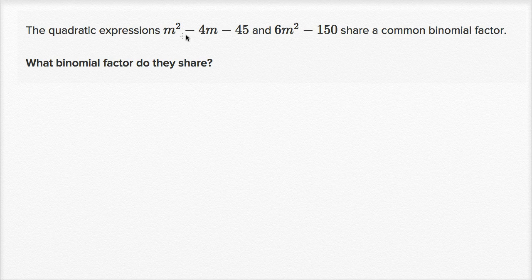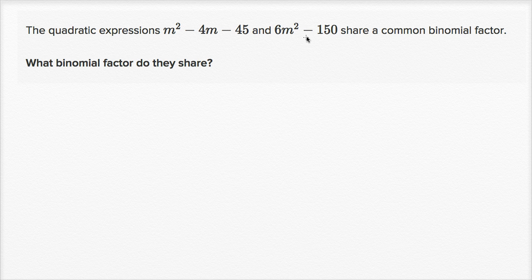We're told that the quadratic expressions m squared minus 4m minus 45 and 6m squared minus 150 share a common binomial factor. What binomial factor do they share?